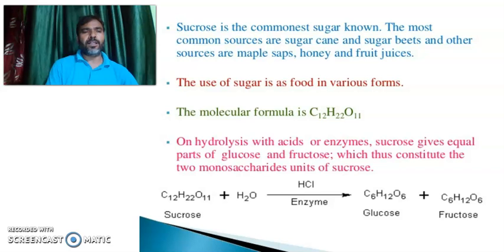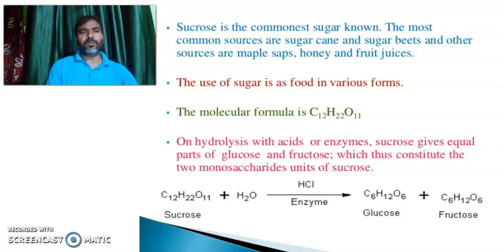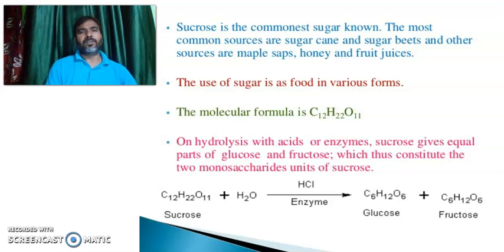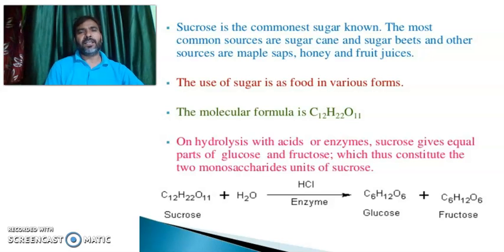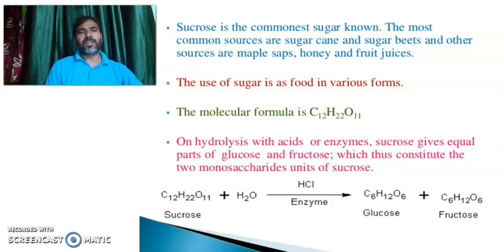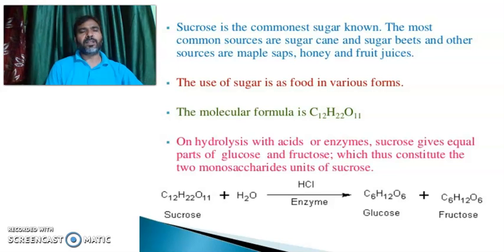Let us start step by step learning of Structure Elucidations of Sucrose. Sucrose is the most common sugar known. The most common sources are sugar cane and sugar beets, and other sources are maple syrup, honey, and fruit juice. The use of sugar is as food in various forms.